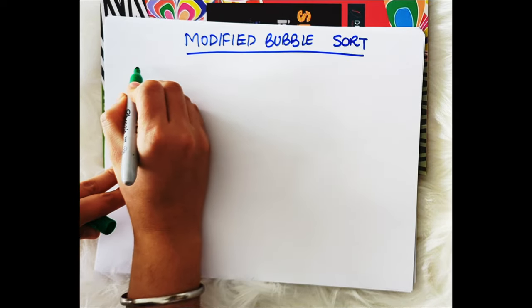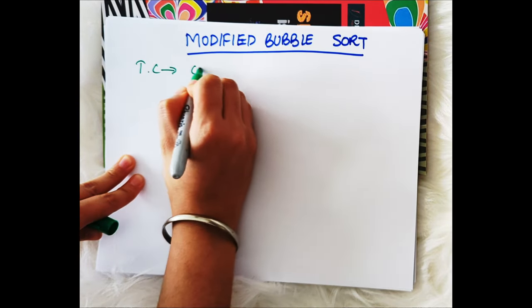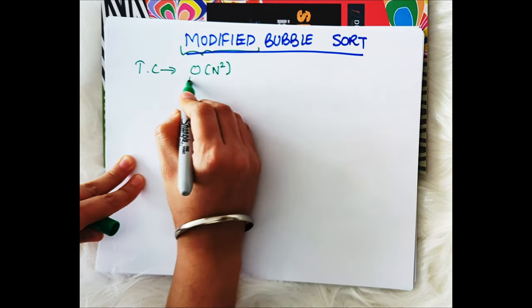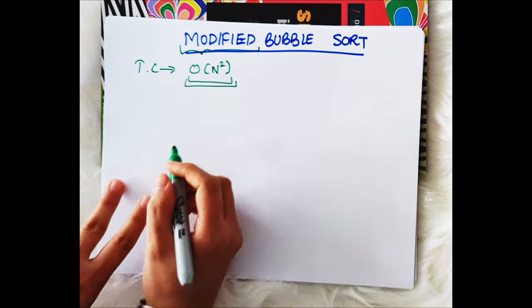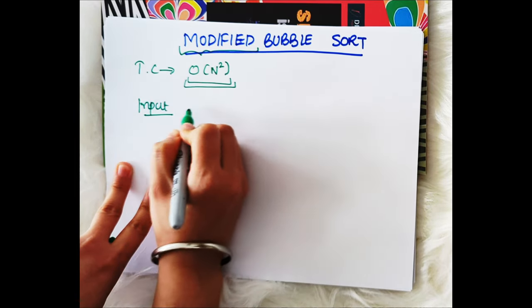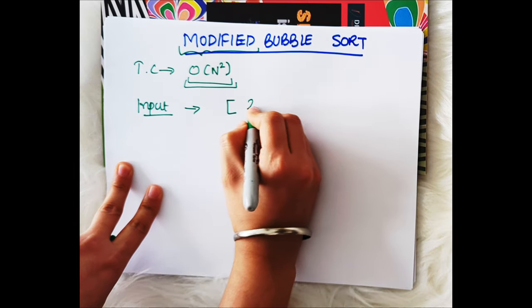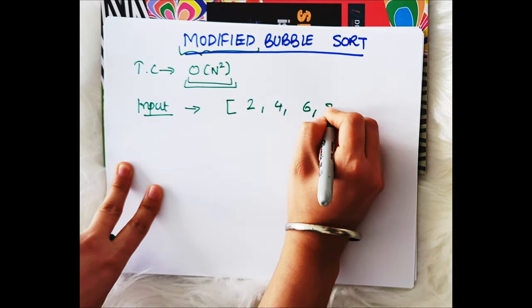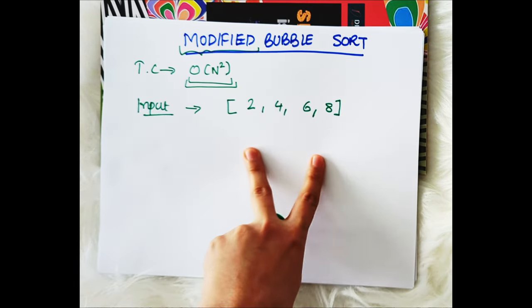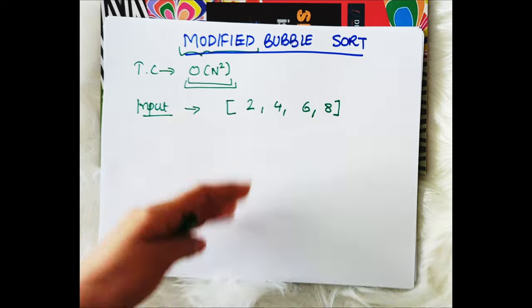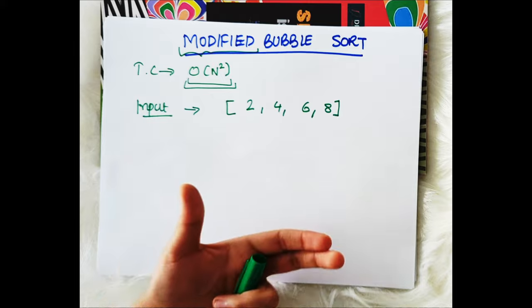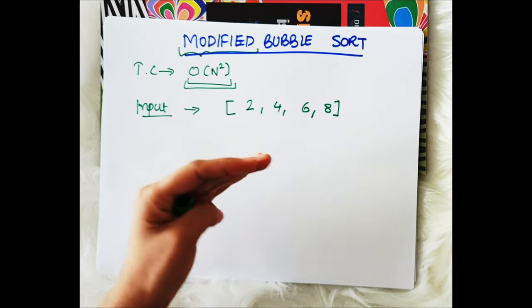So as we saw in bubble sort, the time complexity was O(n²). So in this modified bubble sort we will try to reduce this time complexity. As we saw in bubble sort, we used to take input, let's say we have 2, 4, 6, 8. So now for this type of input which is already sorted, we were overdoing our comparisons just to get the sorting output in the end because we already have our array sorted.